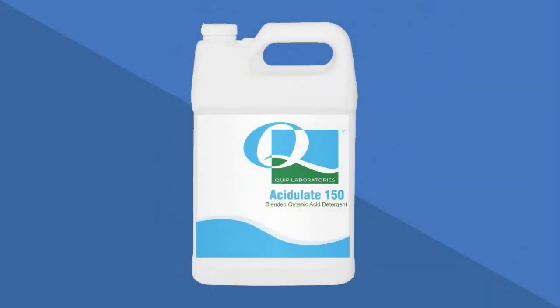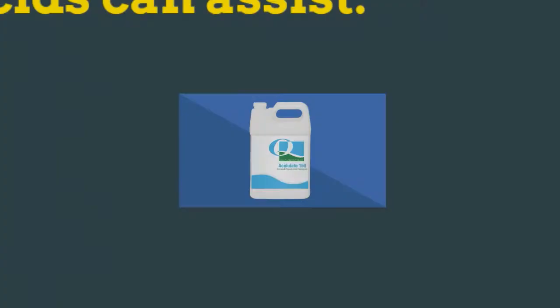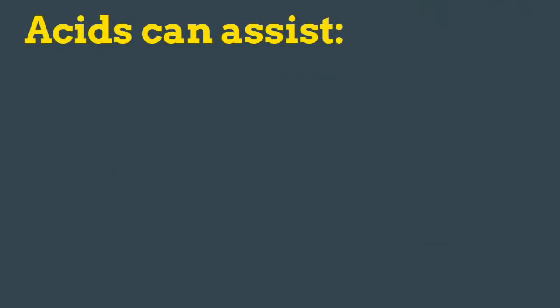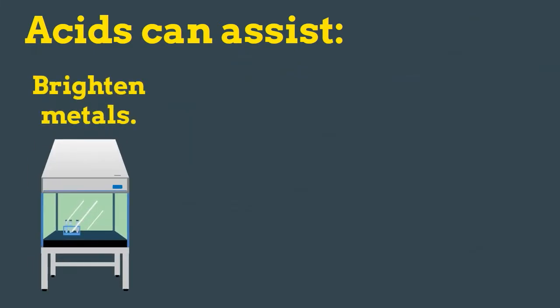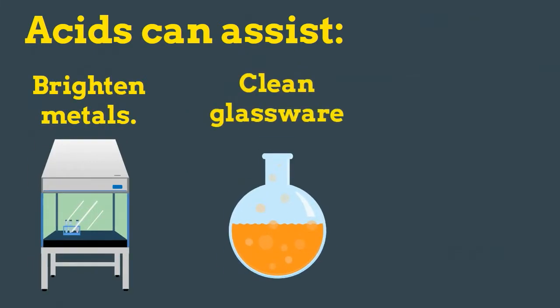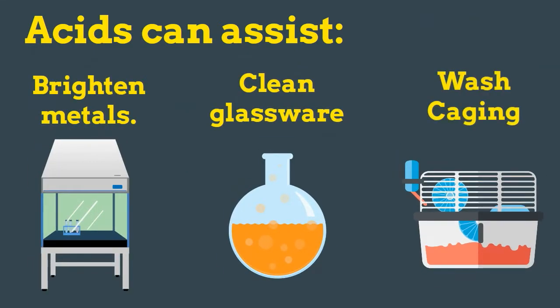So what difference do they make practically? Acidic cleaners, like our Acidulate line, are often used to remove mineral deposits or oxidation on many of the surfaces you use every day. They can be exceptionally handy to brighten metals, clean glassware, and in cage wash solutions.